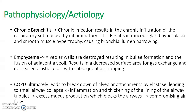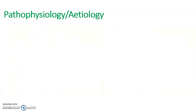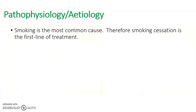A diagram shows normal lungs on the left with healthy alveolar air sacs, and on the right the diseased state where alveolar walls have been destroyed, forming larger irregular alveoli. Bronchioles lose their shape and become clogged with mucus, making breathing increasingly difficult for the patient.